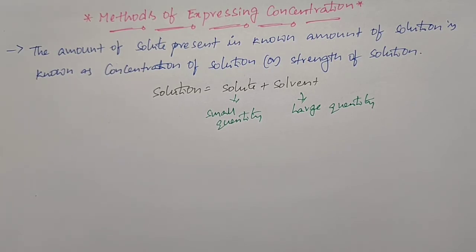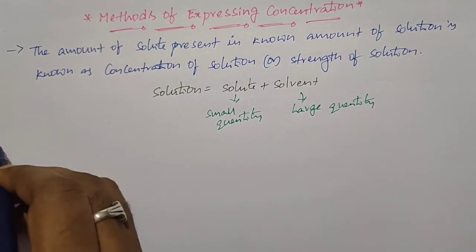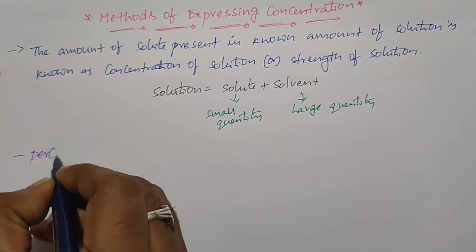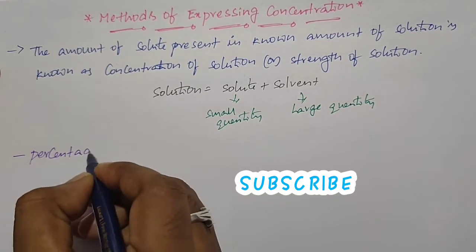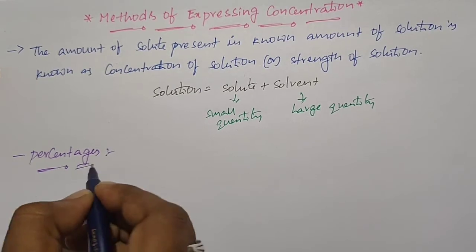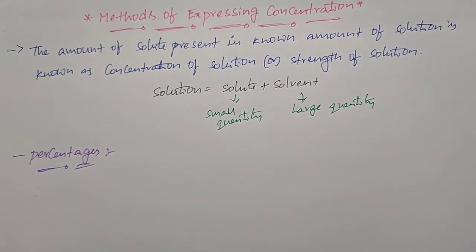The first method of expressing concentration of solution is called percentages. What is meant by percentage? The amount of solute present in 100 parts of solution is called a percentage.